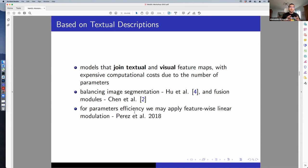When dealing with text, we have a lot of parameters and that's a problem. We have to somehow make the use of parameters work in efficient ways. One of those ways is applying feature-wise linear modulation.